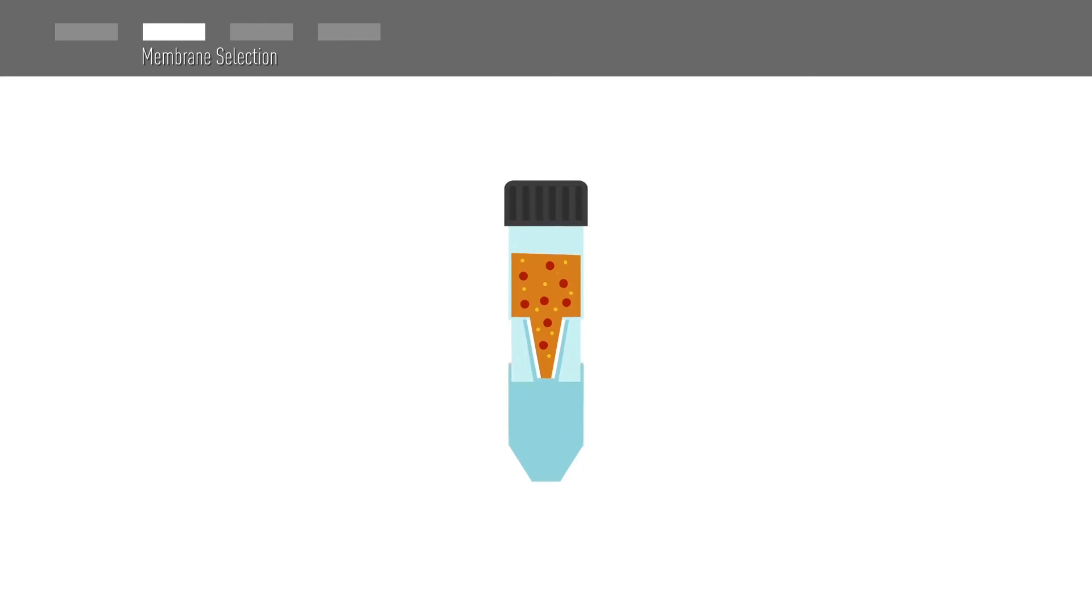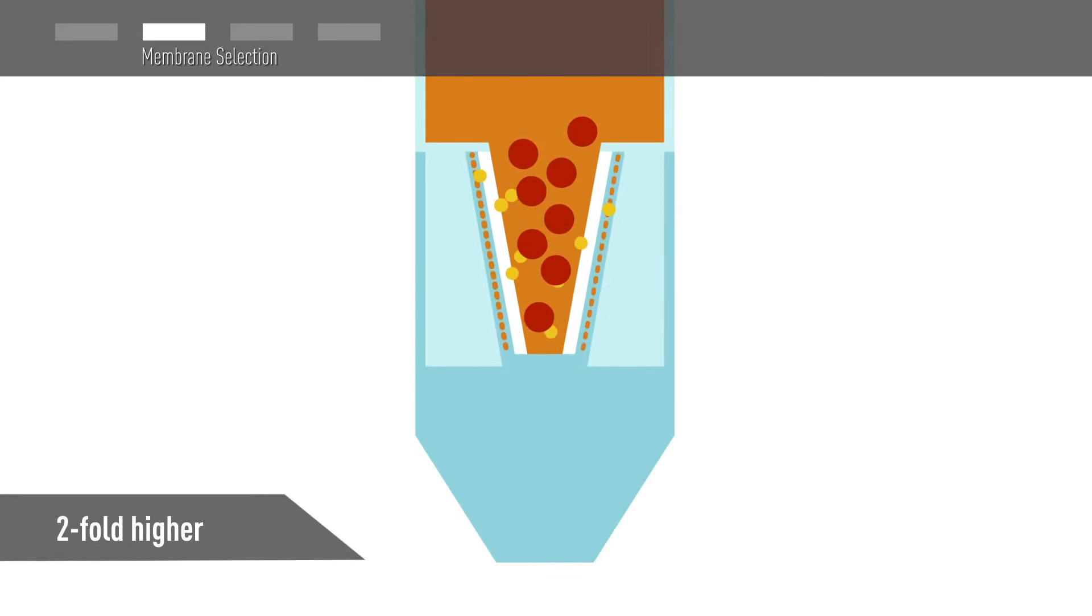Membrane selection will depend on the size of your protein. PES membrane will retain proteins and other molecules with a molecular weight that is at least two-fold higher than the molecular weight cutoff.